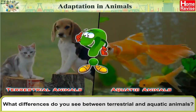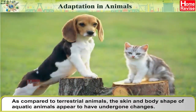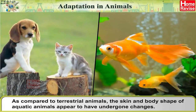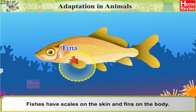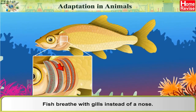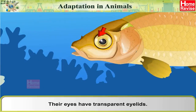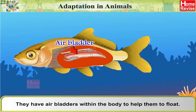What differences do you see between terrestrial and aquatic animals? As compared to terrestrial animals, the skin and body shape of aquatic animals appear to have undergone changes. Fishes have scales on the skin and fins on the body. Their body tapers towards both ends like a spindle. Fish breathe with gills instead of a nose. Their eyes have transparent eyelids, and they have air bladders within the body to help them float.